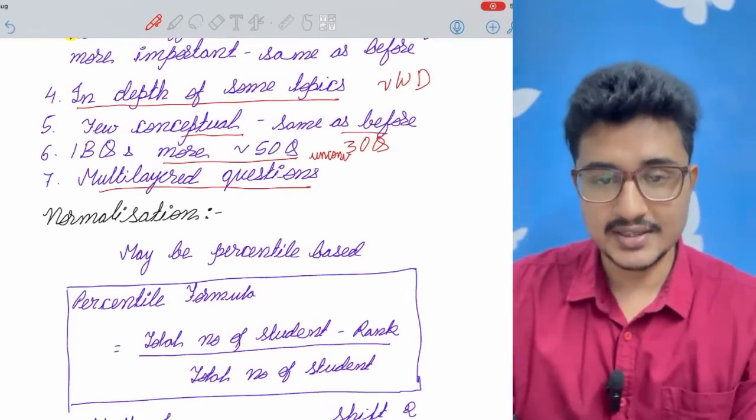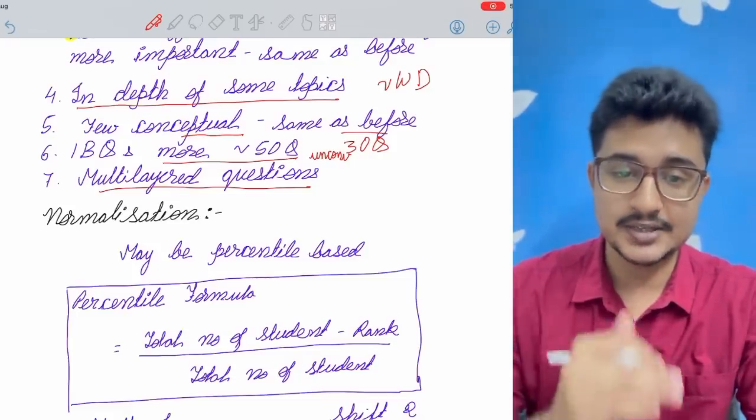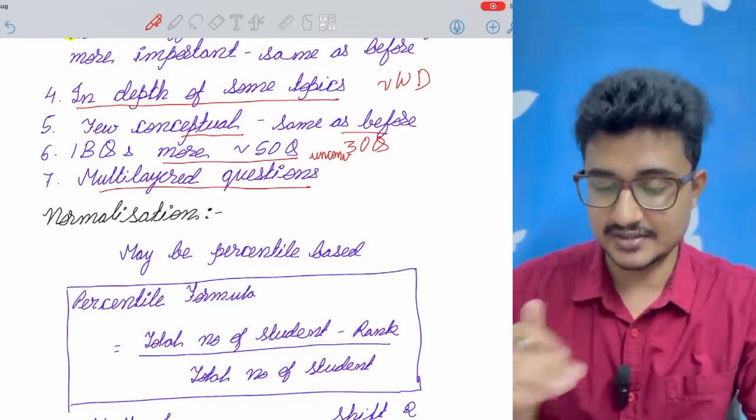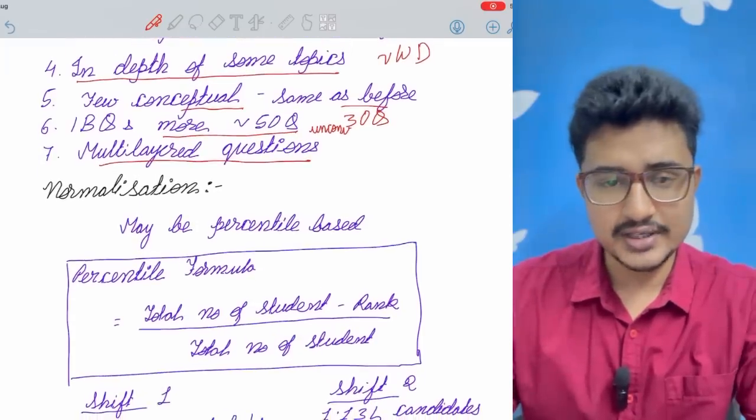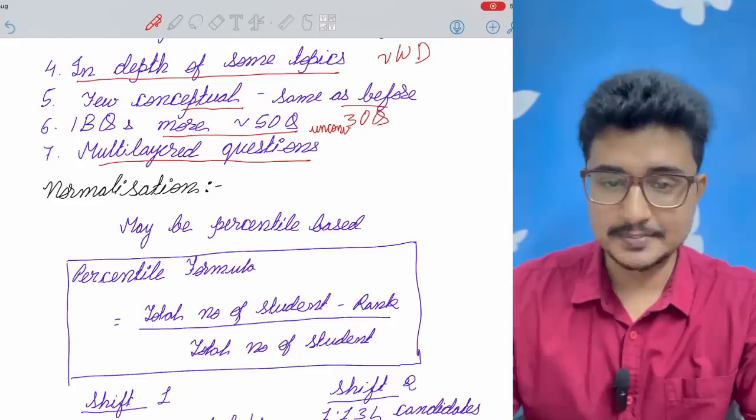Now how would normalization happen? Because we have seen that there is wide range of disparity between the morning shift and the evening shift. According to me I think percentile based normalization is a pretty easy one and they might follow this. This is just speculation.